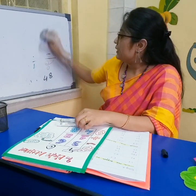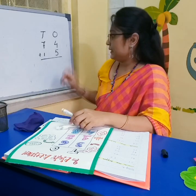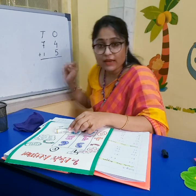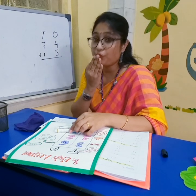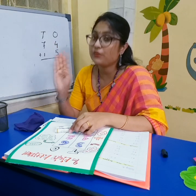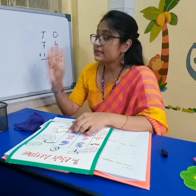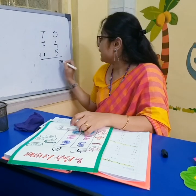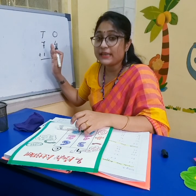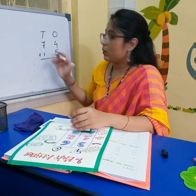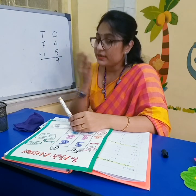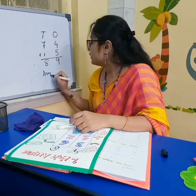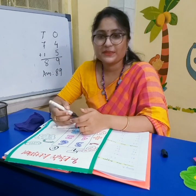Now let's do another example. In the ones column, here is four and five. So we add four and five first: four, five, six, seven, eight, nine. So here it is nine. Then we shift to the tens column and count. Here is seven plus one: seven, eight. So we write the answer: eighty-nine.